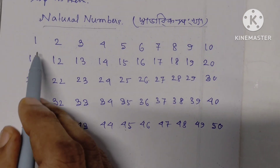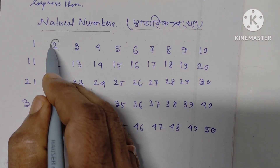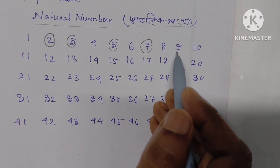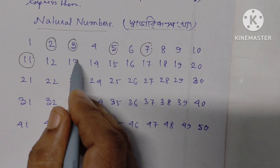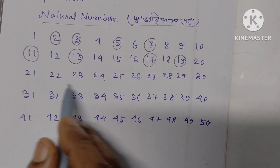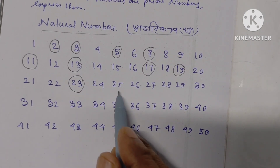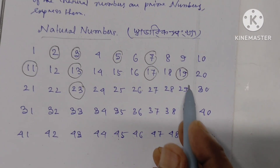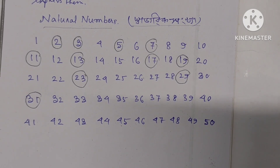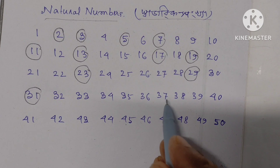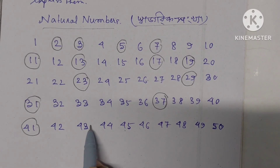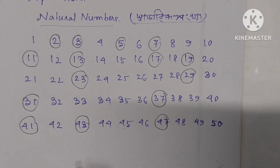The prime numbers are: 2, 3, 5, 7, 11, 13, 17, 19, 23, 29, 31, 37, 41, 43, 47.